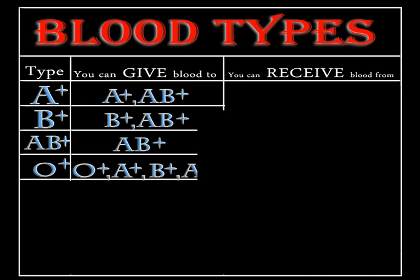A positive can give a ride to positive people in the morning class or morning work. So A positive can give blood to A positive or AB positive — as long as they have an A in it, they're good, because that's the morning class. B positive, the afternoon class, can give blood or give a ride to anybody with a B. And remember, positive can only give a ride to positive. So B positive can give blood to B positive or AB positive.